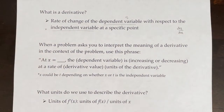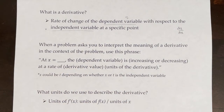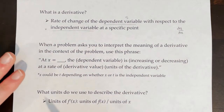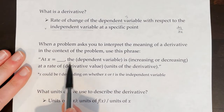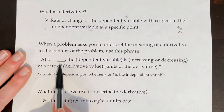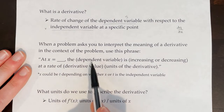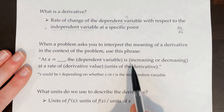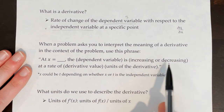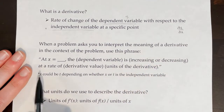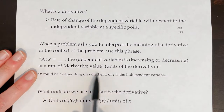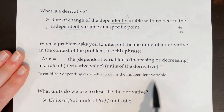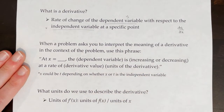When a problem asks you to interpret the meaning of the derivative in the context of the problem, there's a specific phrase that you can use that will guarantee success. You can say: at x is equal to blank — the value given for the independent variable — the dependent variable, whatever that is, like the temperature of the water or the number of people, is either increasing or decreasing, depending on whether it's positive or negative, at a rate of the derivative value with its units. The phrase is a little bit confusing, but as we do some examples, it should make more sense.